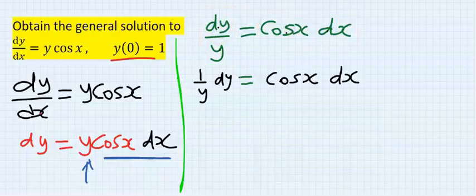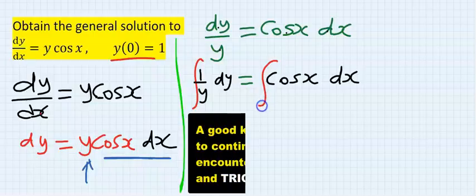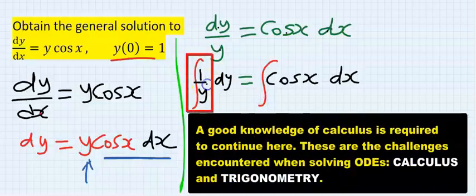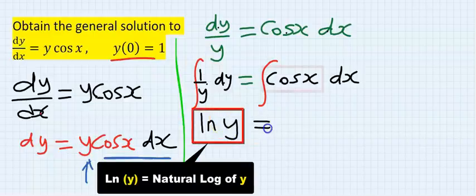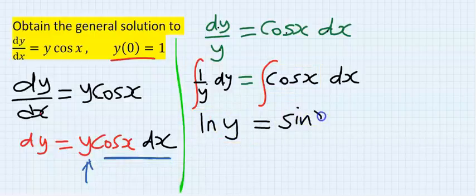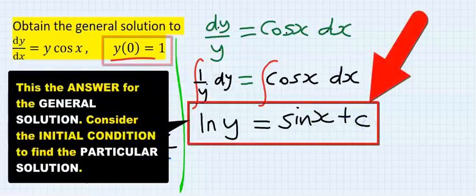Step number three: integrate both sides. If I integrate one over y with respect to y, I'm going to have ln y. If I integrate cos x, I'm going to have sin x plus c.